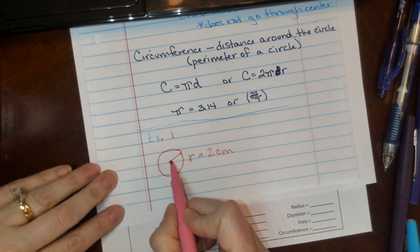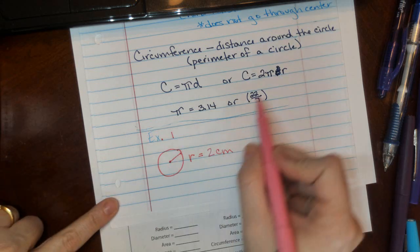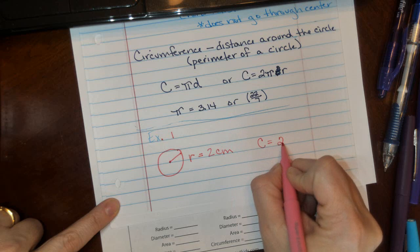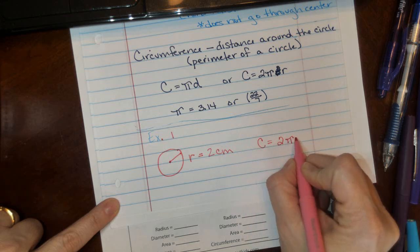Since it's a radius, it goes from the center to the edge. So we're going to use this formula: circumference is two times pi times radius.